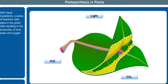With these ingredients, a series of reactions take place in the green cells, resulting in the production of food, water, and oxygen.